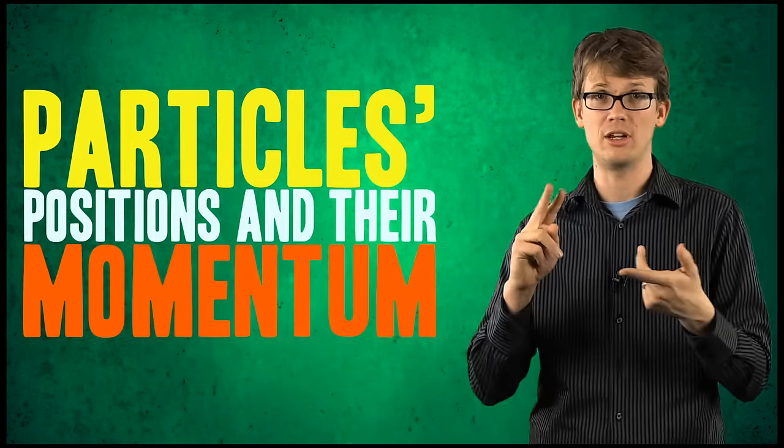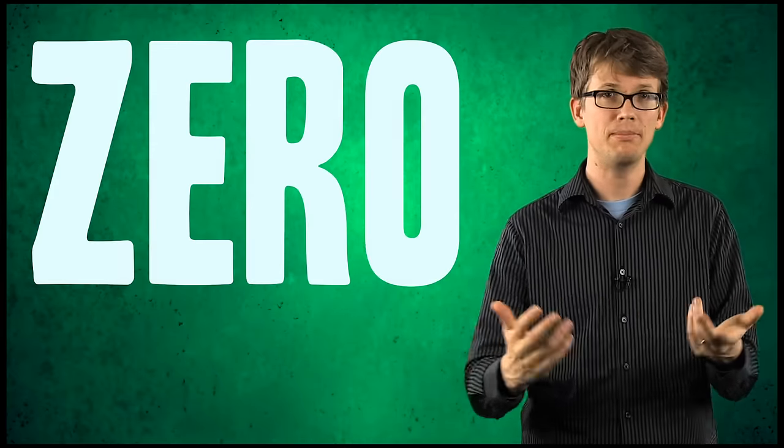So suppose you chill a lump of lead down to the point where there is no motion going on within it, even at a subatomic level. If you could do that, you'd know both the particle's positions and their momentum, which would be zero, but measuring this is impossible. It's forbidden by the uncertainty principle, so it cannot be done. So you can't reach true zero degrees Kelvin.